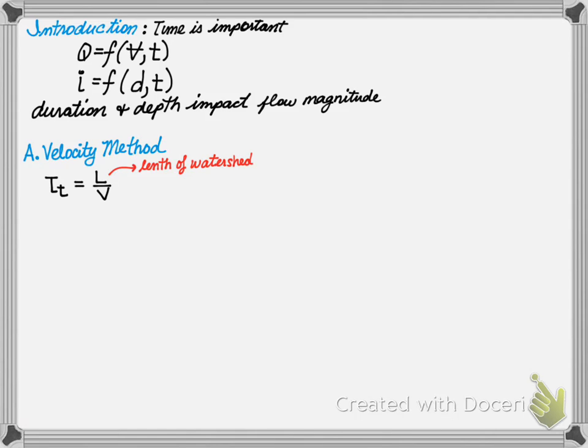It says travel time is equal to the watershed length, L, divided by velocity, V. And remember, T sub T is travel time. It should be noted that on occasion a watershed might be subdivided. And thus, you may have to sum your total travel times to get the overall travel time of a watershed.